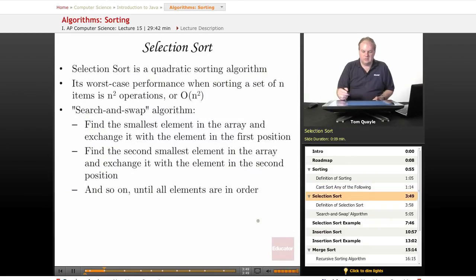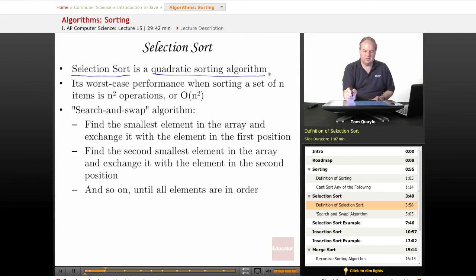The first sorting method that we'll talk about, and this is one of the three that is covered on the AP exam, is called selection sort. And selection sort is known as a quadratic sorting algorithm. If you remember from algebra, a quadratic function has a power of 2. The highest power of the function f of x would be x squared. So a quadratic algorithm means that if you have a set of n items, the worst case performance, meaning the longest it could possibly take to sort, would be n squared operations, thus the term quadratic.